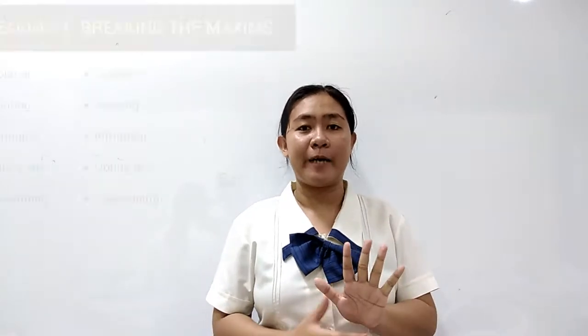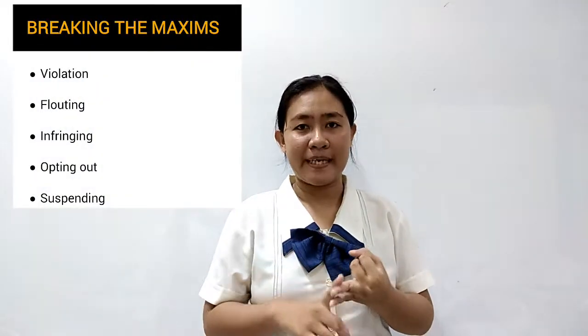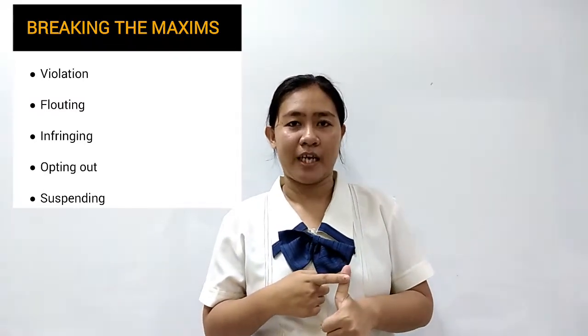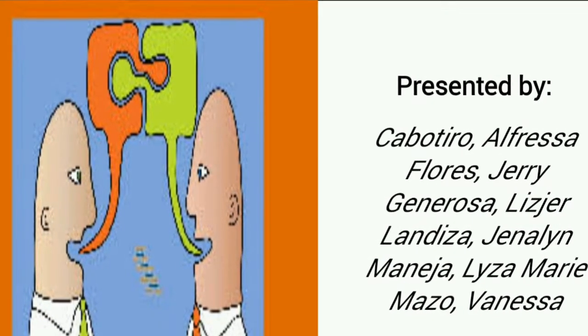As a recap, there are five ways of breaking the maxim: violation, suspending, flouting, opting out, and infringing. In conclusion, we always use the cooperative principle when we talk. At the same time, we always violate the maxims, but still the message we want to convey is understood in most cases. Indeed, Grice's Cooperative Principle can be seen as a great contribution in suggesting an effective principle. That's all for today's session, and I hope you learned something from it. Thank you so much for watching, and have a great day.